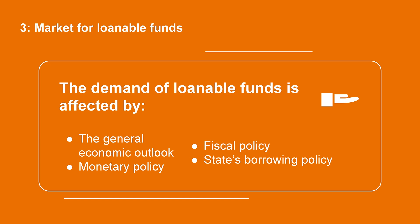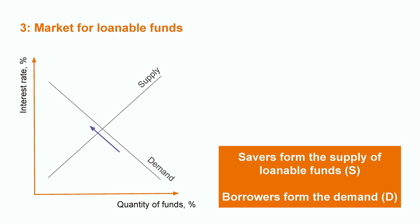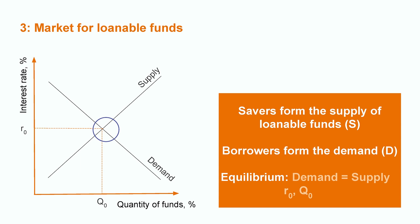Fiscal policy is a third factor — for instance, investment tax credits mean funds will be cheaper for borrowers. Finally, the state can borrow; more state borrowing will increase the demand for loanable funds. As is usually the case, demand declines with the price of money, which is the interest rate. As in any other market, the interest rate R0 and the quantity of loanable funds Q0 that are exchanged are decided when supply equals demand.